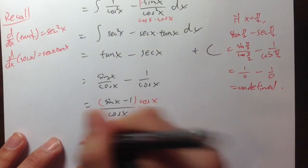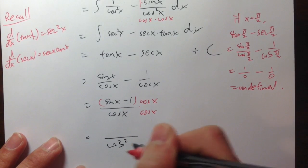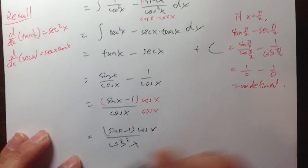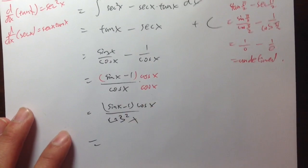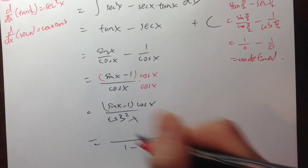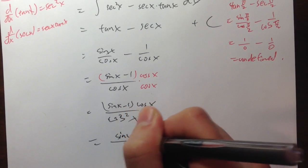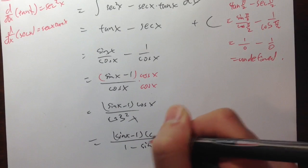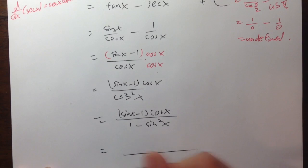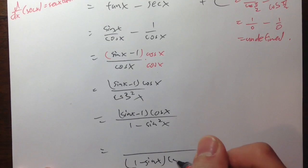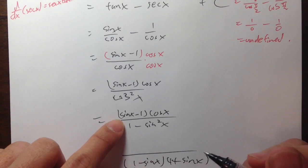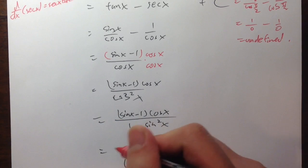After multiplying top and bottom by cos x, on the bottom we get cosine squared x, and on the top we have sin x minus 1. We can rewrite this as negative of (1 minus sin x), giving us a cleaner final form for the antiderivative.